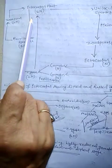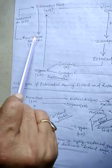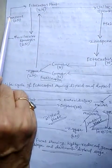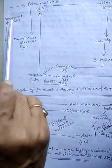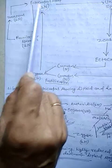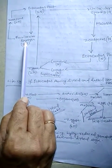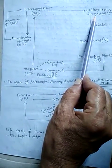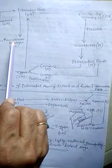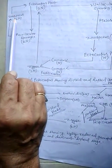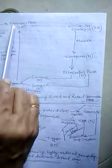Besides this, Ectocarpus also produces plurilocular or multilocular sporangia, in which zoospores are produced without meiosis, meaning these zoospores are diploid. These diploid zoospores develop to form the diploid Ectocarpus plant. So Ectocarpus produces two types of sporangia: unilocular sporangia producing zoospores by meiosis, and plurilocular sporangia producing zoospores without meiosis.